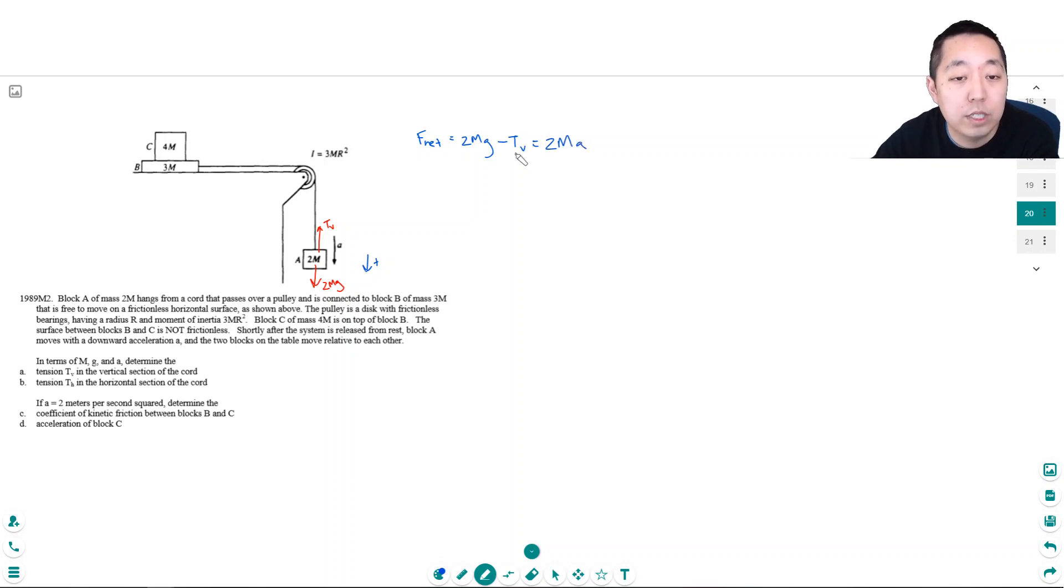I don't know Tv and I don't know A, so there's two unknowns for this one equation. So I can't solve anything yet. Let's do the free body diagram on this thing.